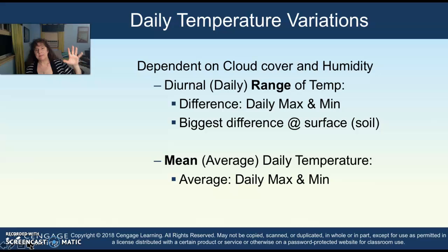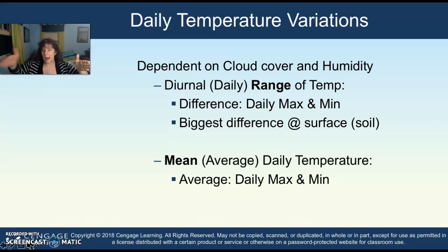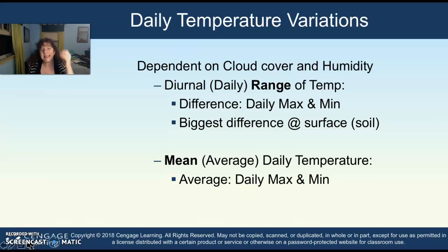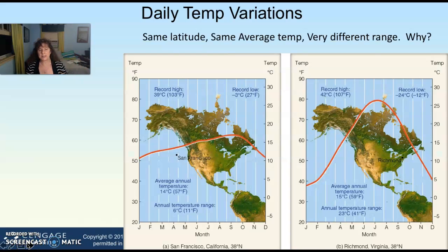When we look at daily temperature variations in a particular area, we look at a daily range of temperature between the daily max and the daily min, and we look at the average temperature of the day, which can average out hourly temperatures over 24 hours. A diurnal range of temperature is a daily range of temperature, and a mean is the average daily temperature.